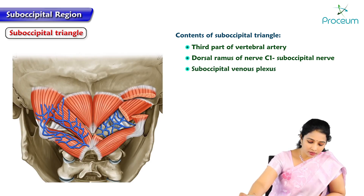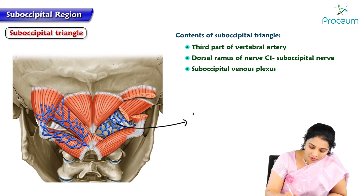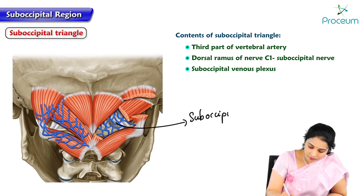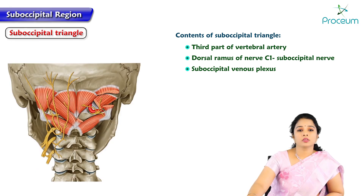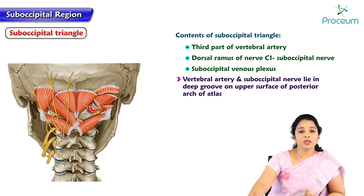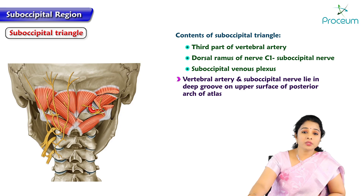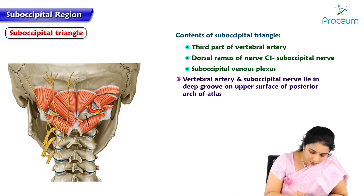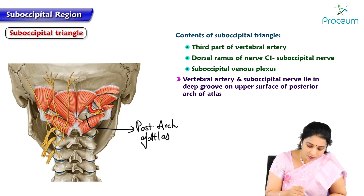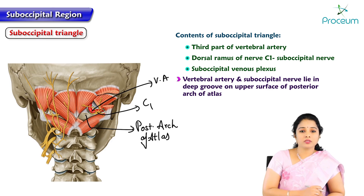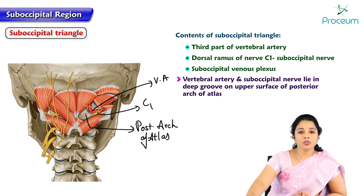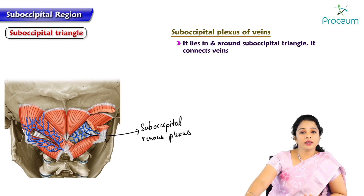The next content is the suboccipital venous plexus. We can see several veins within the triangle forming the suboccipital venous plexus. The vertebral artery and suboccipital nerve lie deep in a groove on the upper surface of the posterior arch of atlas. The suboccipital plexus of veins lies in and around the suboccipital triangle, and the vertebral artery and C1 dorsal ramus are present in that groove on the upper surface of the posterior arch of the atlas.